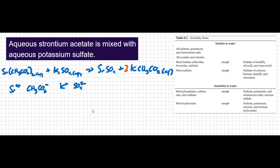What about strontium sulfate? As I go down the solubility table, most sulfates are soluble — but then there's an exception. The exceptions for sulfates include calcium, barium, lead(II), and strontium. So strontium sulfate is insoluble: it won't dissolve in water, it's going to be a solid. It is insoluble — that's our precipitation reaction. We've mixed two aqueous solutions together to make a solid.